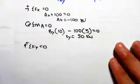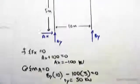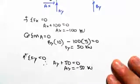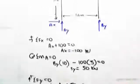Taking forces in the y direction, up is positive. We have Ay plus By. So Ay plus 50 equals zero. Solving that we have Ay equals minus 50 kilonewtons.